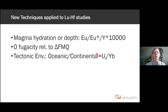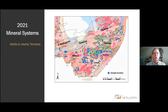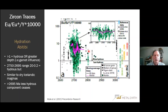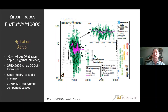The new techniques applied in the earlier paper and used here today: we use this expression to look at magma hydration, we measure oxygen fugacity referenced to FMQ, and we look at tectonic environment by looking at uranium over ytterbium. We now have all this terrain to look at. When we look at europium over europium-star, we're looking at hydration. With hydrous magmas, amphibole crystallization inhibits plagioclase crystallization — therefore we concentrate uranium and europium and deplete yttrium.